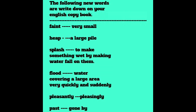Your fourth task: write down the following new words on your English copybook. Faint — very small. Heap — a large pile. Splash — to make something wet by making water fall on them. Flood — water covering a large area very quickly and suddenly. Pleasantly — pleasingly. Past — gone by. Write these new words on your English copybook.